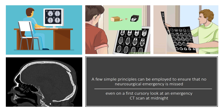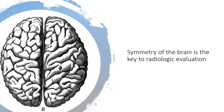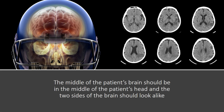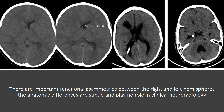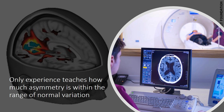A few simple principles can be employed to ensure that no neurosurgical emergency is missed, even on a first cursory look at an emergency CT scan at midnight. Symmetry of the brain is the key to radiologic evaluation. The middle of the patient's brain should be in the middle of the patient's head, and the two sides of the brain should look alike. There are important functional asymmetries between the right and left hemispheres, but the anatomic differences are subtle and play no role in clinical neuroradiology. Only experience teaches how much asymmetry is within the range of normal variation.